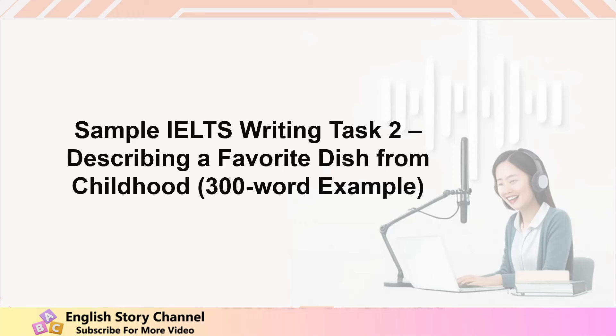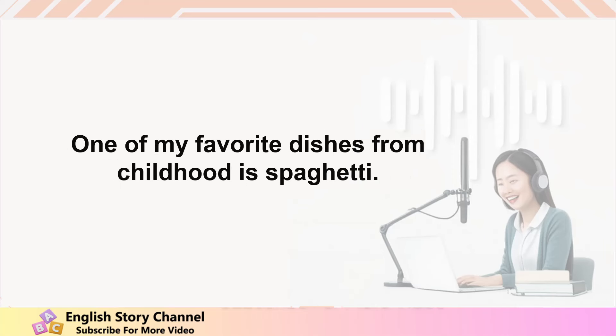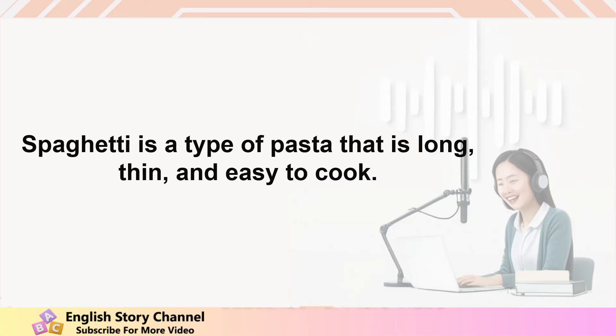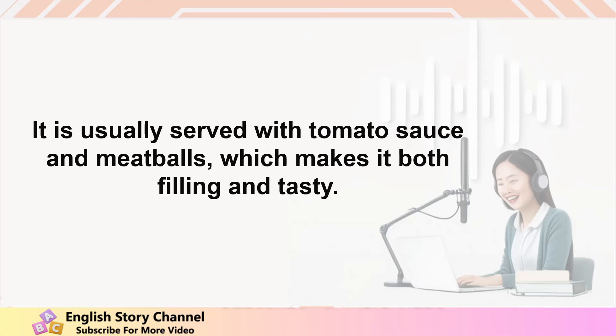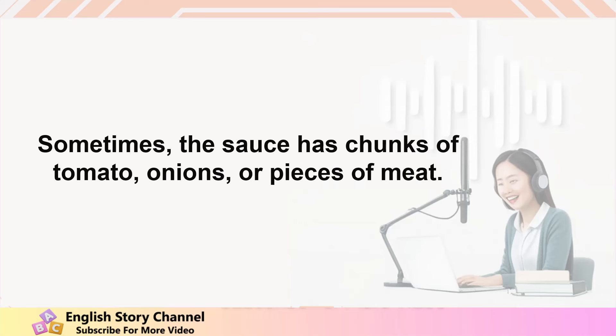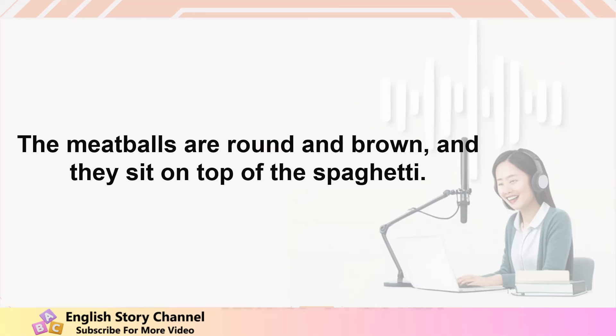Sample IELTS writing task 2 — Describing a favorite dish from childhood. One of my favorite dishes from childhood is spaghetti. It is a simple dish, but it reminds me of family gatherings and special occasions. Spaghetti is a type of pasta that is long, thin, and easy to cook. It is usually served with tomato sauce and meatballs, which makes it both filling and tasty. Spaghetti looks very simple, with its long noodles covered in a red sauce. Sometimes the sauce includes chunks of tomato, onions, or pieces of meat. The meatballs are round and brown, and they sit on top of the spaghetti.